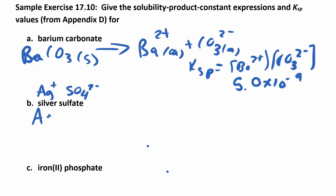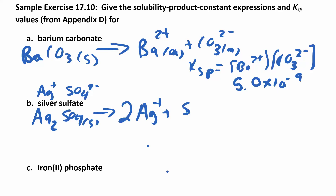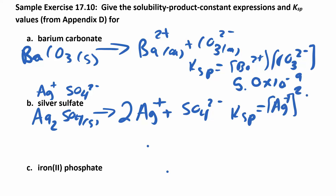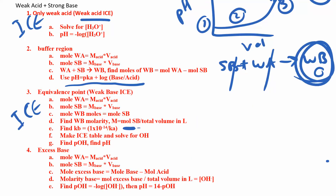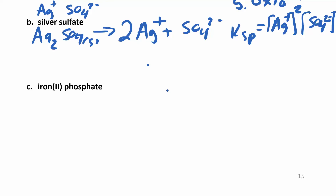Silver sulfate: silver has a plus 1 charge and sulfate has a minus 2 charge, so the formula is Ag₂SO₄. That subscript 2 is important — when you dissociate it into ions you get 2 silver ions and one sulfate. The Ksp expression is [Ag⁺]² × [SO₄²⁻]. Looking that up, the Ksp is 1.5 × 10⁻⁵, which is not too terribly small.